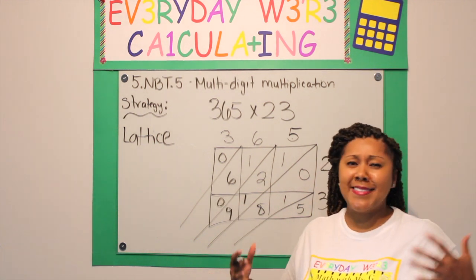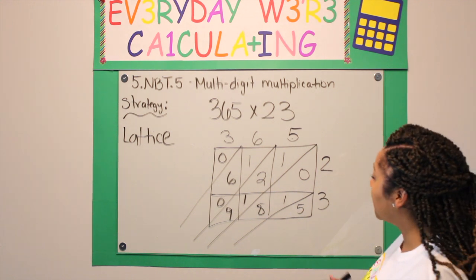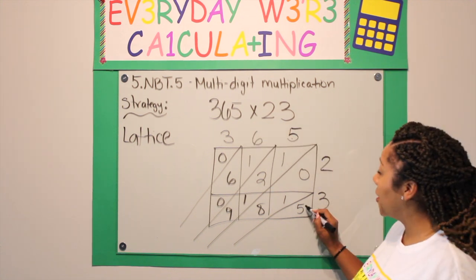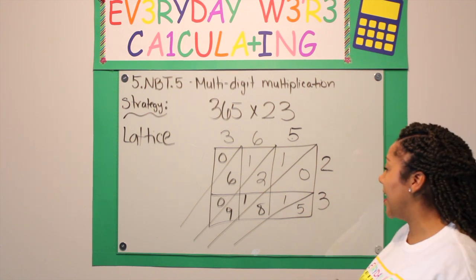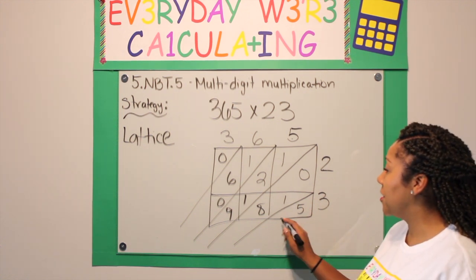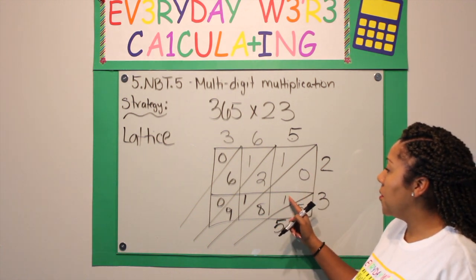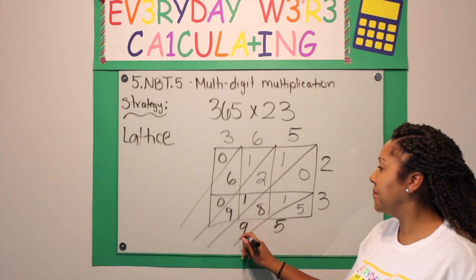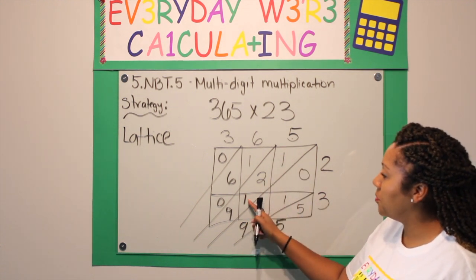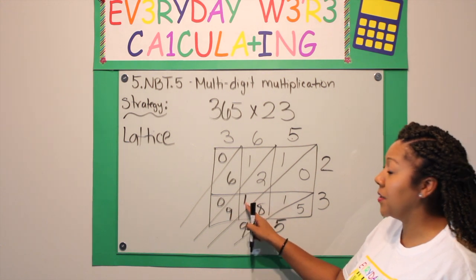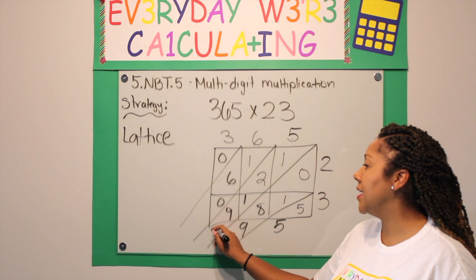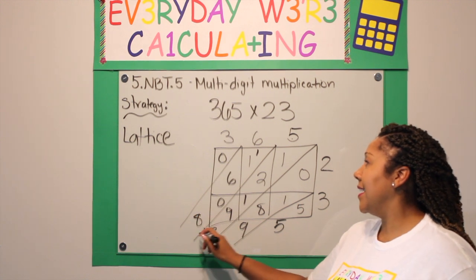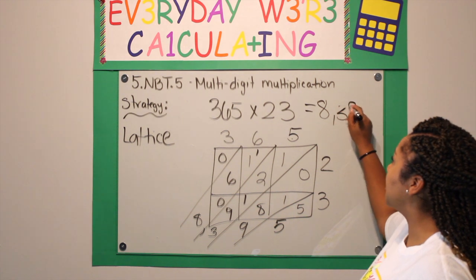Now it just looks like a maze — a bunch of numbers. But what you are going to do is add only what is inside the diagonal columns together. Here I don't have anything to share, so this is a 5. Here I have 0, 1, and 8 within this column, so it is 8 plus 1 is 9. Here I have 1 plus 2 plus 1 plus 9 is 13 — you still must regroup. Now it is 6 plus 1 plus 1 is 8. And my answer is again 8,395.